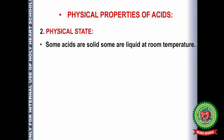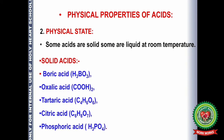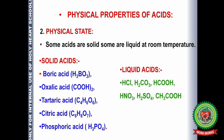The second physical property is physical state. Acids can be solid or liquid at room temperature. The acids that are solid in nature are boric acid, oxalic acid, tartaric acid, citric acid, and phosphoric acid. The acids that are liquid in nature are hydrochloric acid, carbonic acid, formic acid, nitric acid, sulfuric acid, and acetic acid.